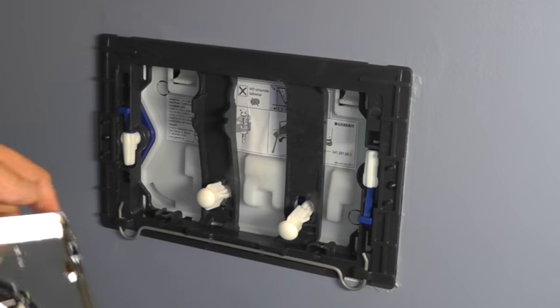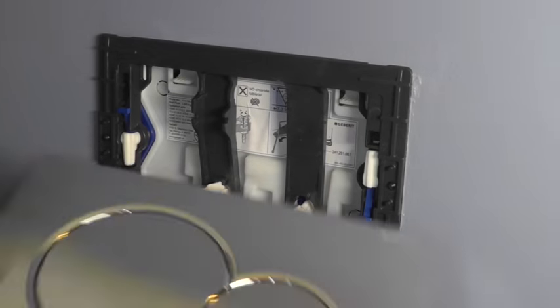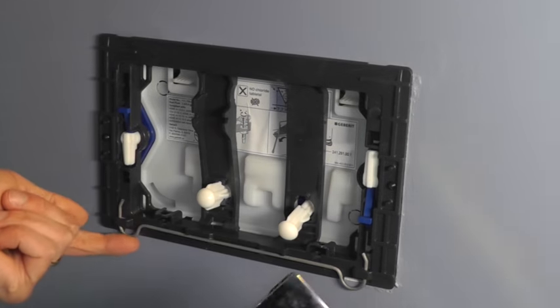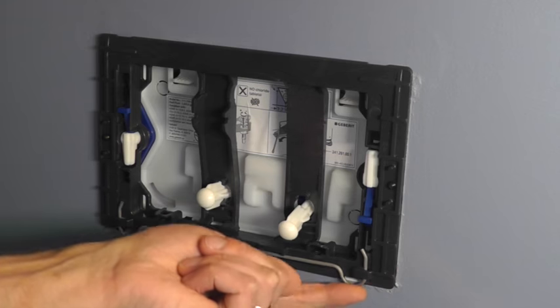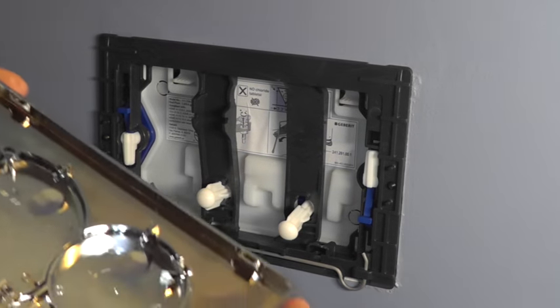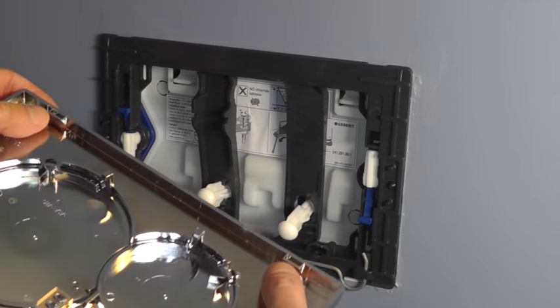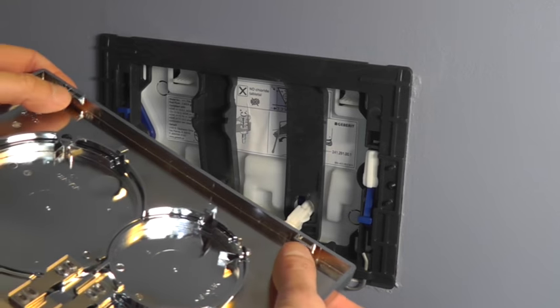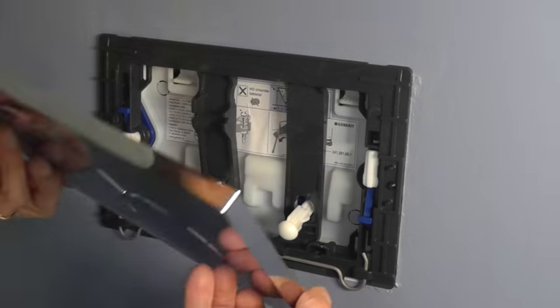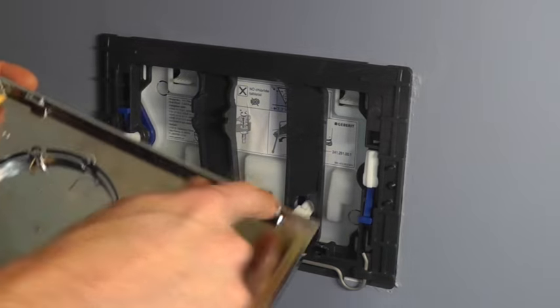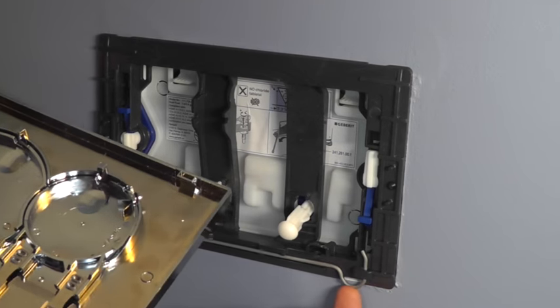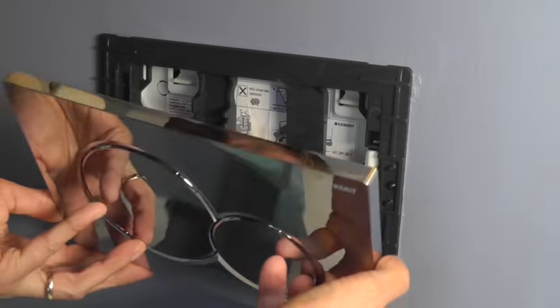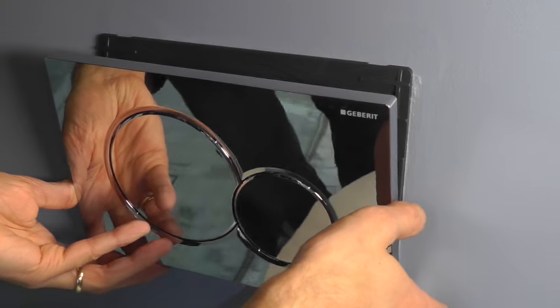So then to get the actuator plate back on we have to make sure we have these little springs here on the left and on the right. And then the plate has these little tabs here on the bottom. And we have to make sure that these tabs catch behind the springs here on the left and on the right. Otherwise it won't attach right.